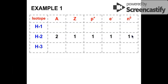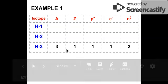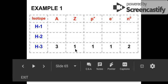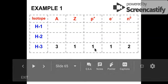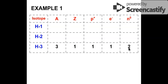Now we're ready for hydrogen-3. 3 is the new mass number, so 3 is automatically written in the mass number column. Again, because it is hydrogen, the atomic number remains 1, which equals the number of protons, which also equals the number of electrons because it's a neutral atom. So the neutrons will be A minus Z — 3 minus 1 equals 2. So we have two neutrons for hydrogen-3.